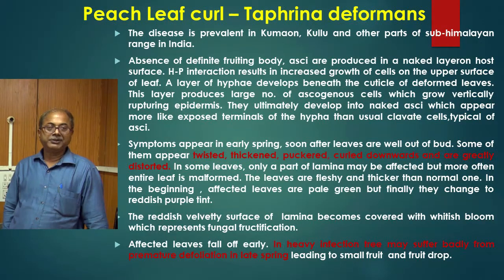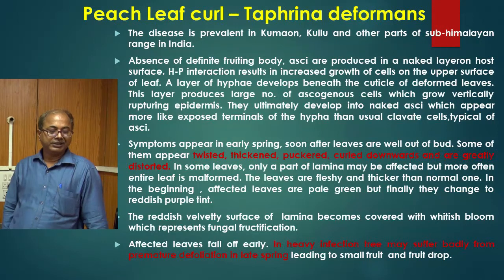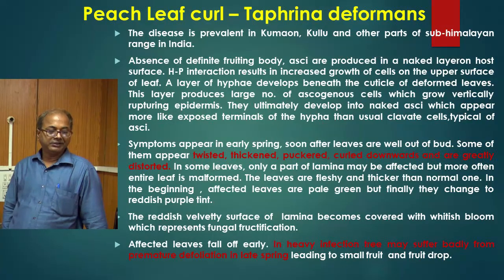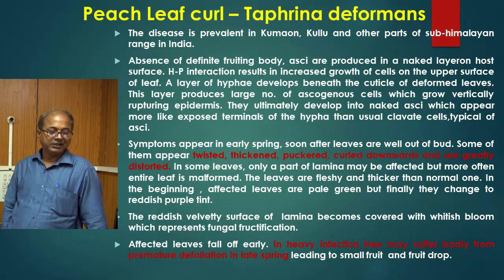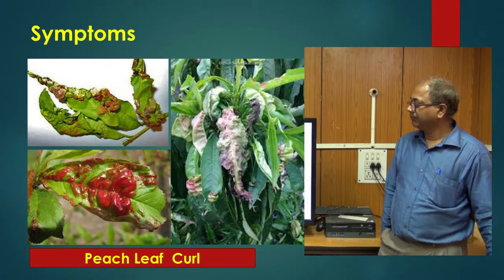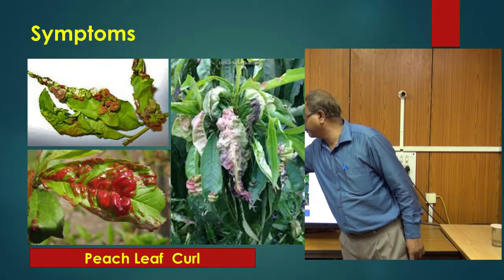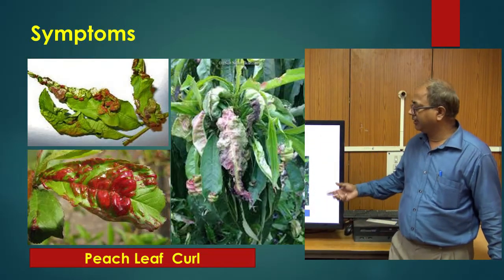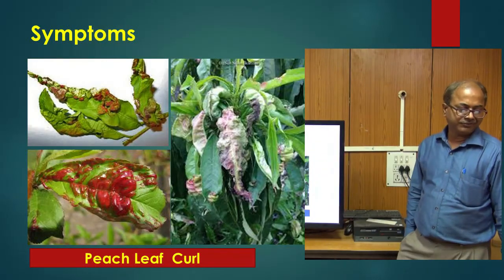In some leaves only part of the lamina may be affected, but more often the entire leaf is malformed. The leaves are fleshy and thicker than normal. Affected leaves initially show pale green color but finally change to a reddish-purple tint. The reddish velvety surface of the lamina becomes covered with whitish bloom, representing fungal fructification. Affected leaves fall off early. In case of heavy infection, the tree may suffer from premature defoliation in late spring, leading to small fruit or fruit drop.